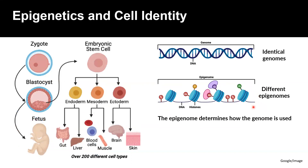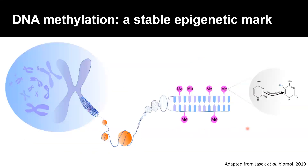It is the epigenome, or the epigenetic modifications, that will determine how the genome is used in each cell type. There are many different epigenetic modifications that can control the expression of genes. One of them is DNA methylation, which works by adding methyl groups to DNA. The specific addition of those methyl groups to DNA regulates whether a gene is expressed or not.